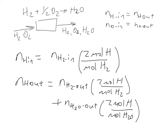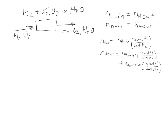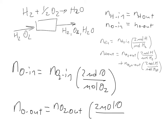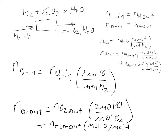We can write a similar equation for oxygen. The number of oxygen atoms in, N_O_in, equals N_O2_in times two moles oxygen per mole O2. And N_O_out equals N_O2_out times two moles O per mole O2, plus N_H2O_out times one mole O per mole H2O. So those are our equations for the atomic species balances.